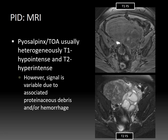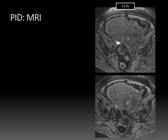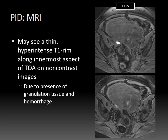Pyosalpinx and tubovarian abscess are usually heterogeneously T1 hypointense and heterogeneously T2 hyperintense, but that signal can be variable if there's associated purulent debris or hemorrhage. You may also see a thin, hyperintense T1 rim along the innermost aspect of the tubovarian abscess on non-contrast images, due to the presence of granulation tissue and hemorrhage. This patient also has an incidental endometriotic implant within the right adnexa, evidenced by that homogeneously hyperintense focus on T1-weighted fat-suppressed images.